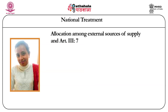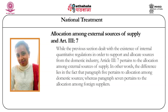Regarding allocation among external sources of supply under Article 3 clause 7: while paragraph 5 pertains to the existence of internal quantitative regulations to support and allocate sources from the domestic industry, Article 3 clause 7 pertains to the allocation amongst external sources of supply. The difference lies in the fact that paragraph 5 pertains to allocation amongst domestic sources, whereas paragraph 7 pertains to allocation amongst foreign suppliers.